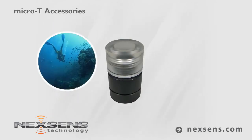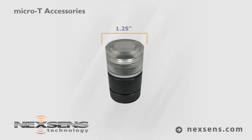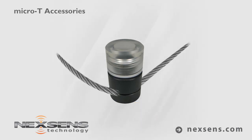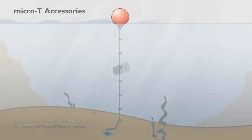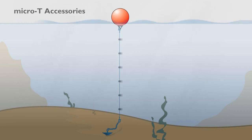Underwater housings are perfect for aquatic deployments or high humidity environments. The housing measures 1.25 inches in diameter by 2 inches tall and allows for easy connection to a 3/16 inch cable or rope. Multiple housings may be attached to a mooring line at specified intervals to create an effective and low-cost temperature profiling system.